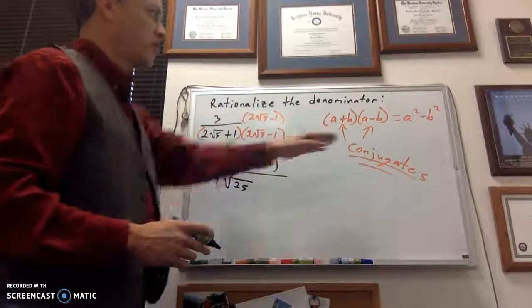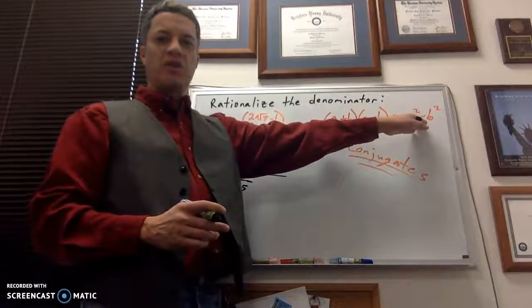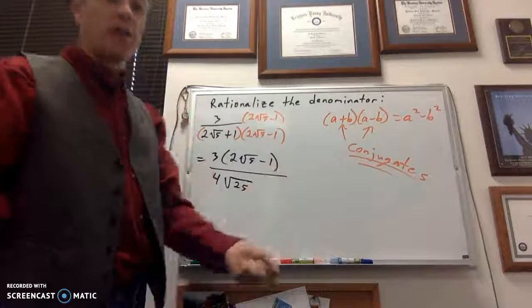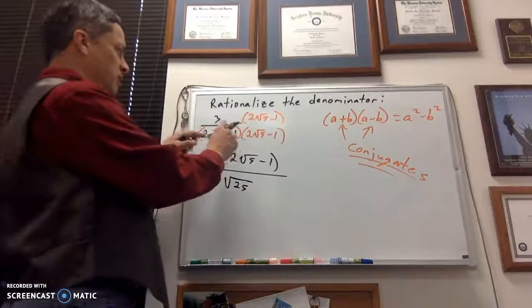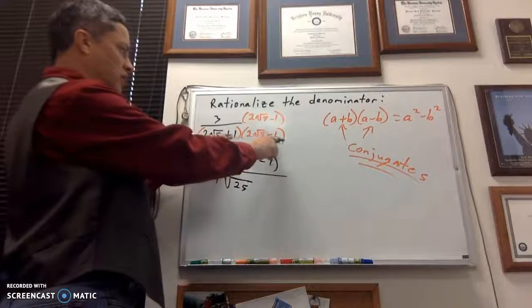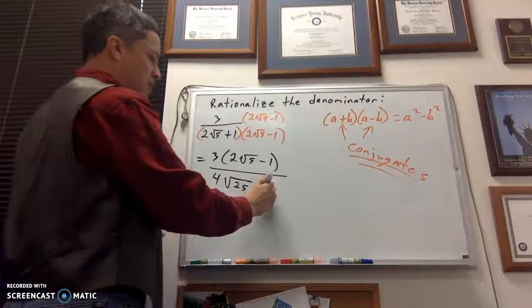Now you could do the outers and inners, but remember what happened with the difference of squares? They just subtract out, so you don't have to worry about that. So really, let's multiply the first and first here, and then the last and the last here. So, 1 times the negative 1 is the negative 1.